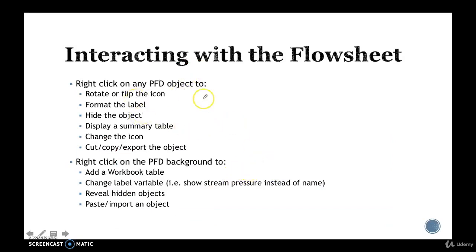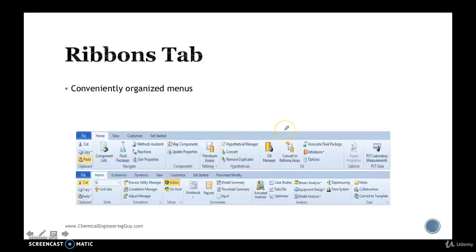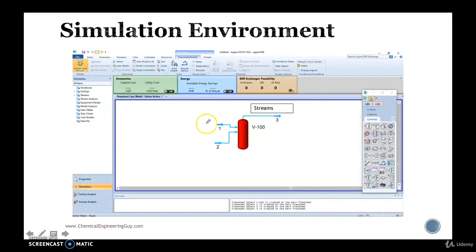These are some overall ways to interact with the flowsheet. If you right-click on the flowsheet, you can either change a name, change an icon, view a summary table, hide object, rotate, copy, paste, and delete. Typically left-click is to add more stuff. This is the background.